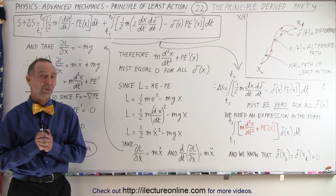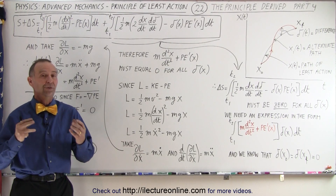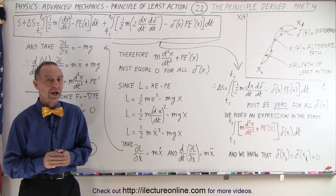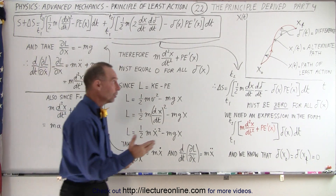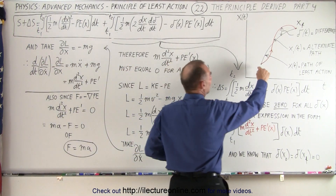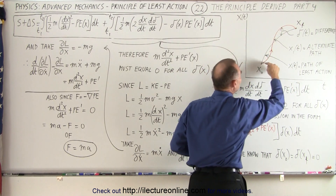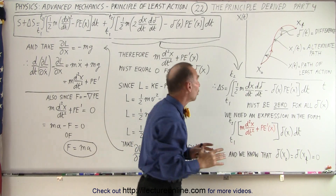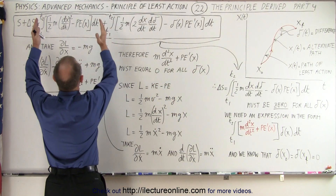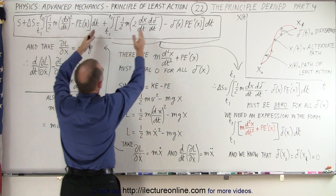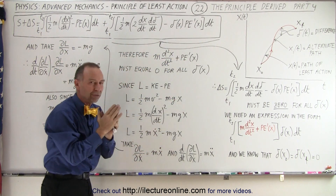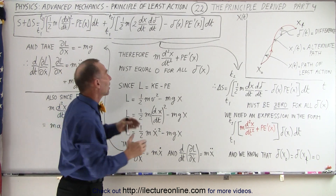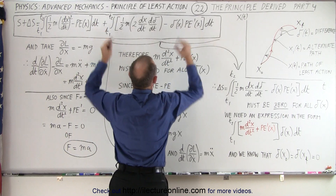Welcome to ElectroOnline, where we're in the process of showing you where the principle of least action came from and how to mathematically derive it. In the previous video, we started with the concept of a path of least action, and if we deviated from that path, we would have a different calculation for the action — which would include the action for the path of least action plus an additional term for that deviation. So if we want to be on the path of least action, this additional part must go to zero.